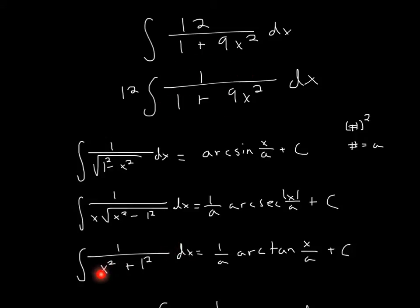How can we make this look like this? Here we have x², so we can change this to make it look more like this format. And 1² is just 1. The 12 can hang out outside.